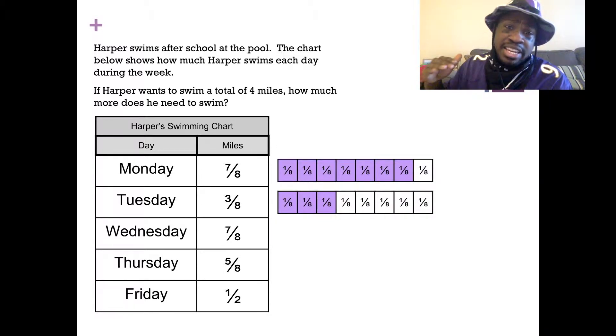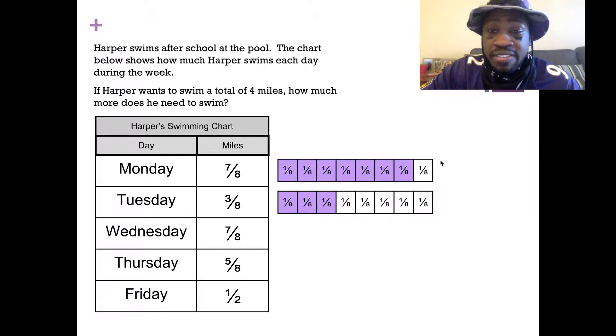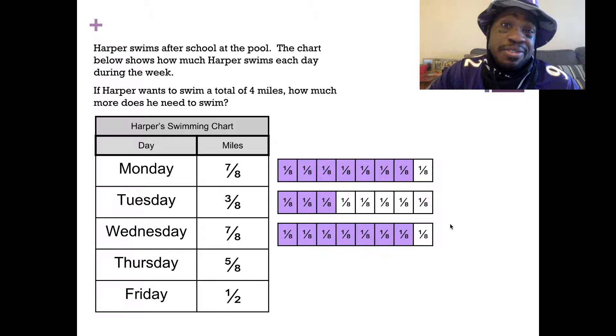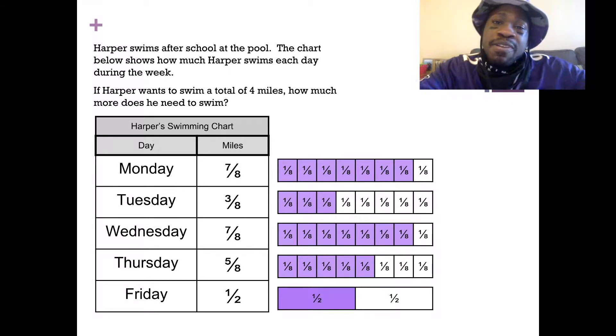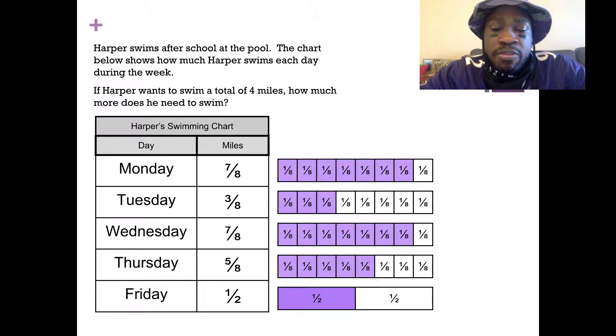So far, if I'm taking just Monday and Tuesday, I see that's a total of ten-eighths. We have seven-eighths plus the three-eighths. So seven-eighths, eight-eighths, nine-eighths, ten-eighths. Then Wednesday, he swims another seven-eighths, right? Thursday, another five-eighths. And then Friday, he swims one-half of a mile.